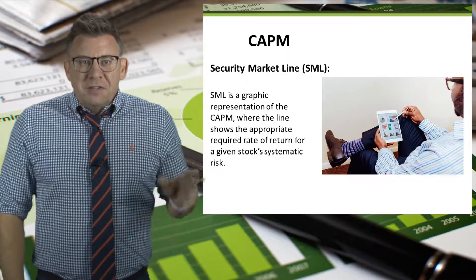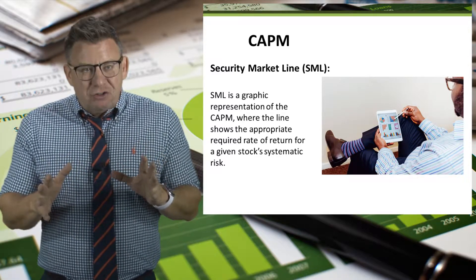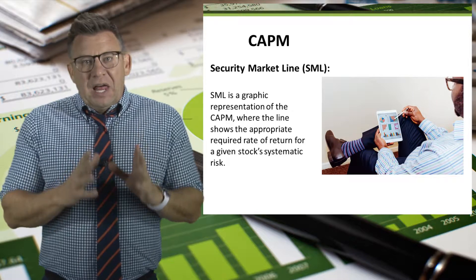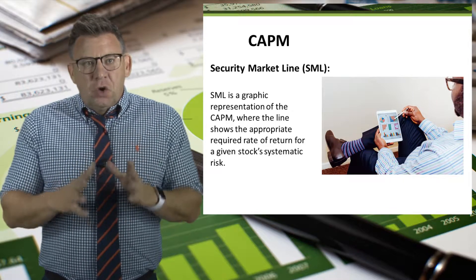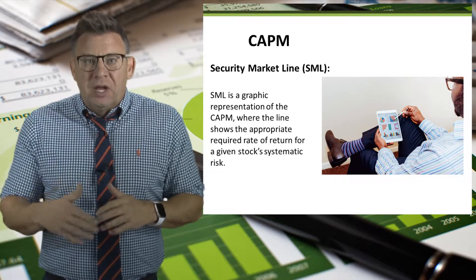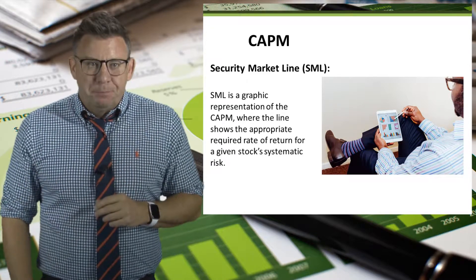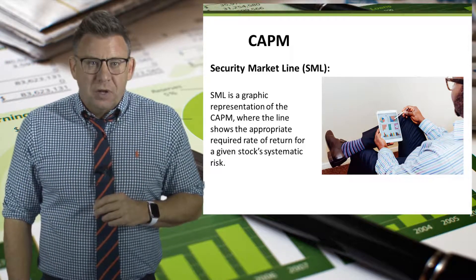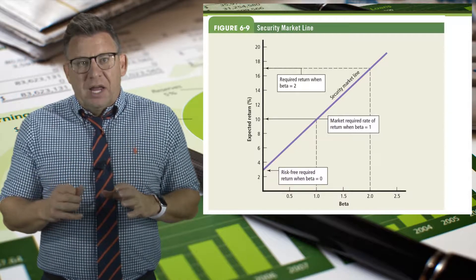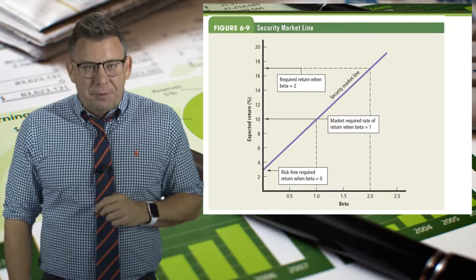The security market line is a graphic representation of CAPM, where the line shows the appropriate required rate of return for a given stock's systemic risk, or beta. This graph shows the security market line and the required returns at various levels of beta.